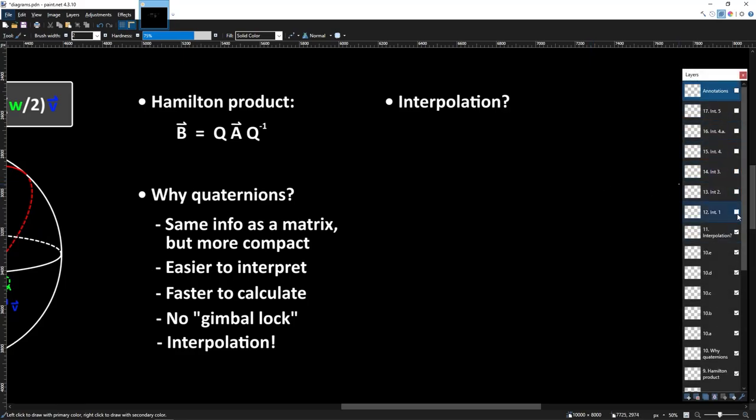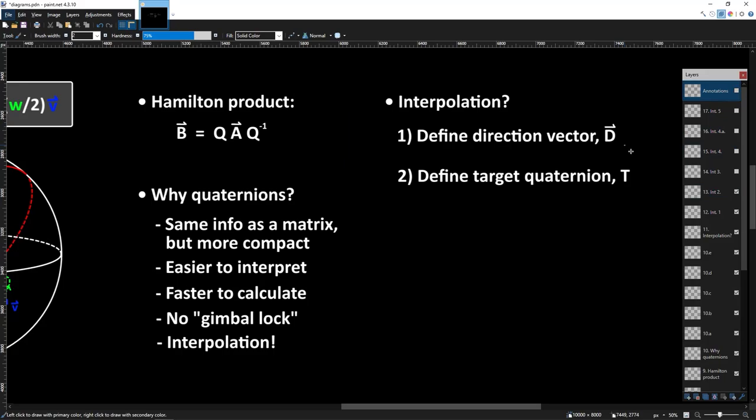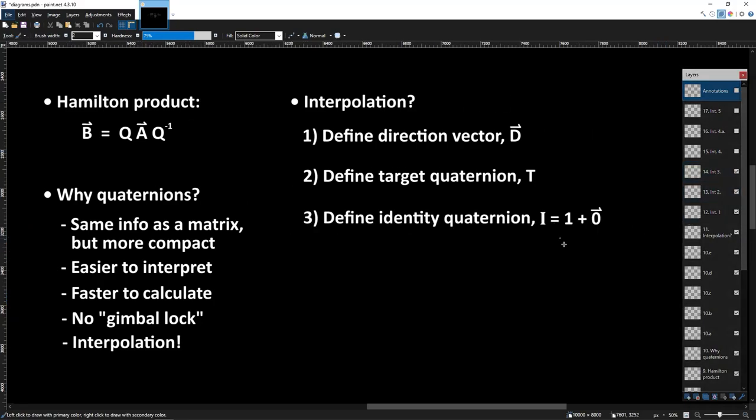Firstly, we define the vector D that shows where our character's head is facing. Secondly, we define the quaternion T that rotates our character's direction vector D into the direction of the thing we want them to look at. Thirdly, we define the identity quaternion, which is given by 1 plus the 0 vector.